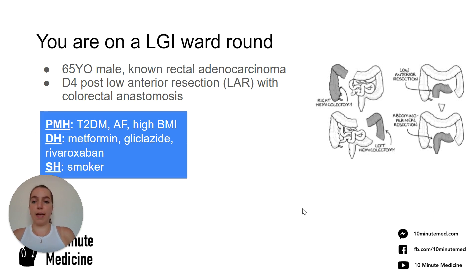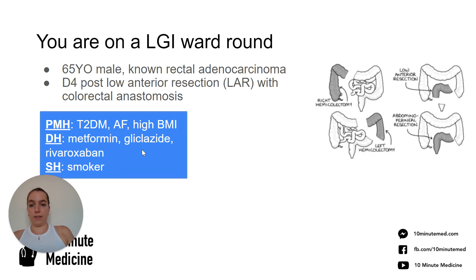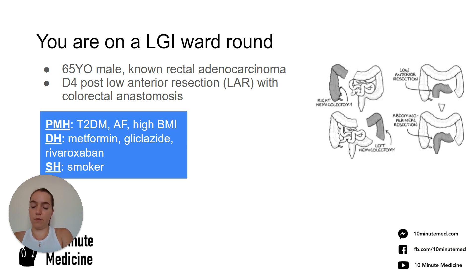Starting with a case: you're on a lower GI ward round and you've got a 65-year-old man who has had rectal cancer that's been cut out, so he's day four post a low anterior resection. There's an image here as to what a low anterior resection is. From the handover, you can see that he's got a past medical history of diabetes, AF, and a high BMI. He's also a smoker, and those are the meds he's on.